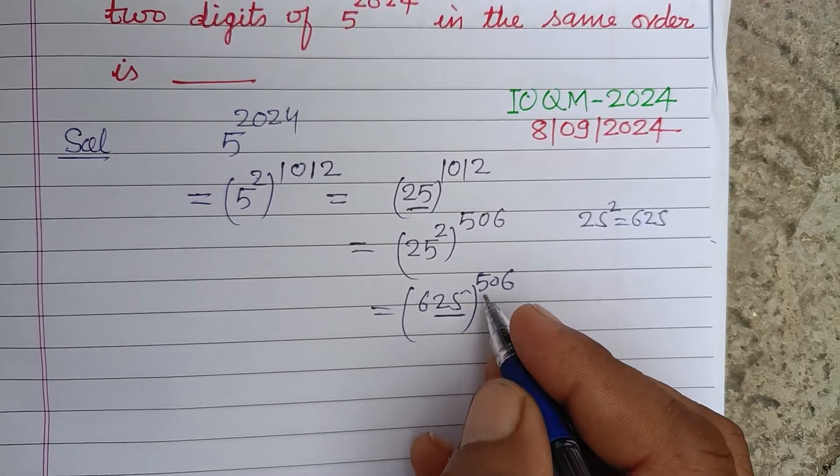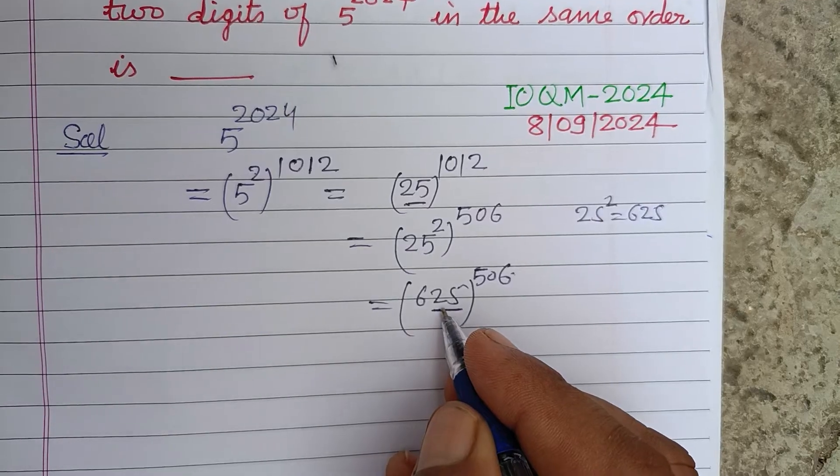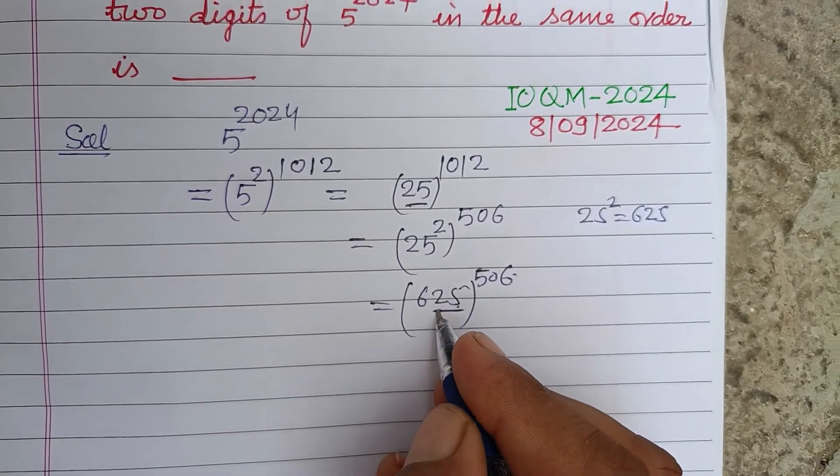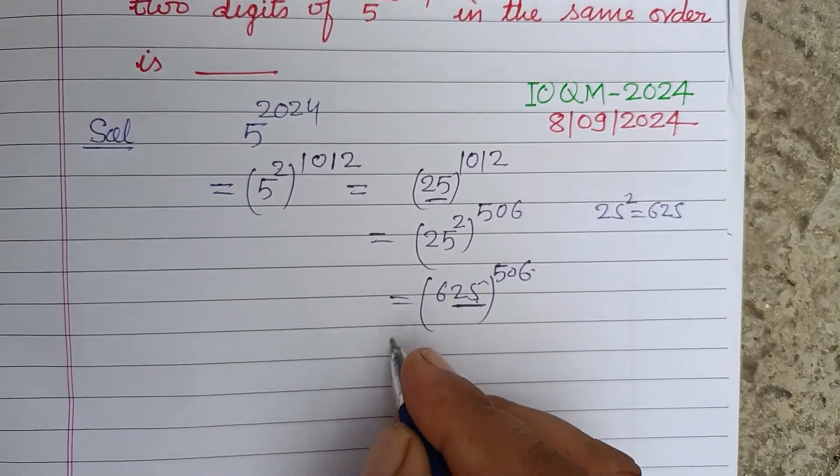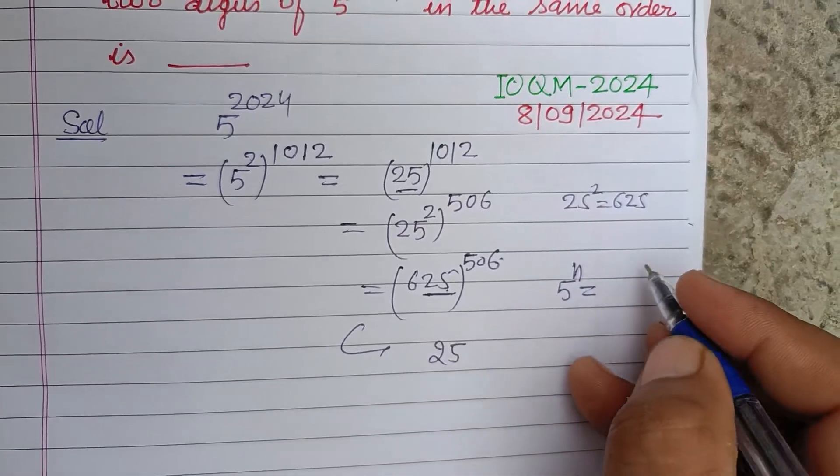We get always 25 at last two places, once the last two places become 25. So 25 is the correct answer.